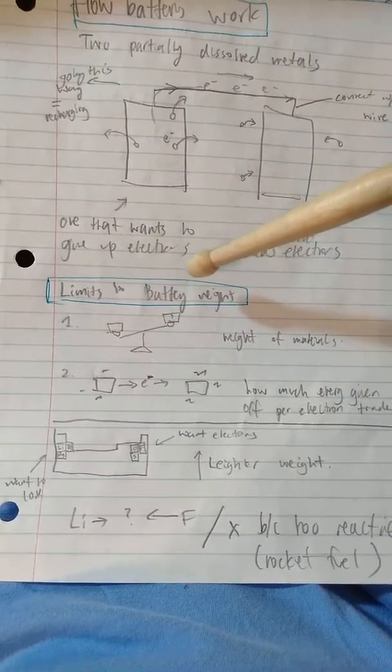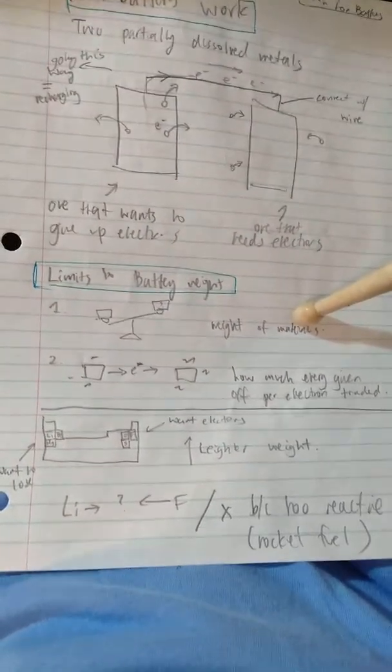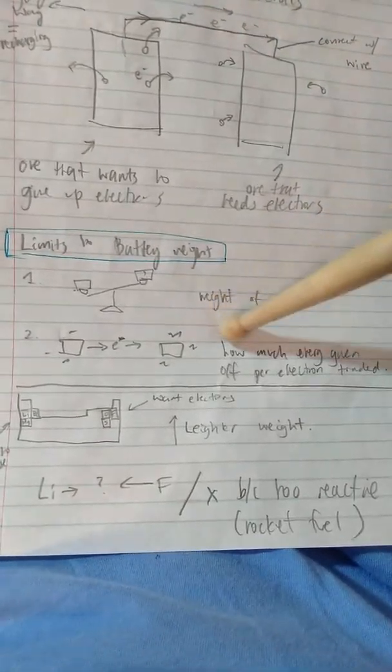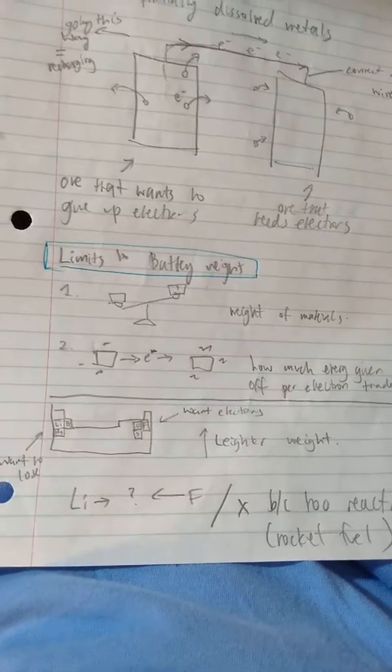What are the limits to battery weight? The limits are the weight of the materials, and how much energy is given off per electron traded.